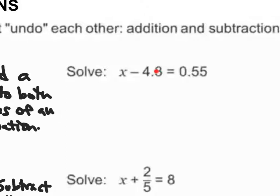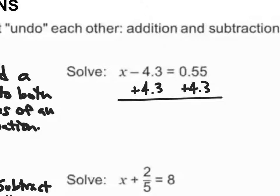Let's solve this equation: x minus 4.3 is equal to 0.55. My goal is to isolate my x value. In order to do that, I have to move this negative 4.3 to the other side. If I'm subtracting 4.3, the opposite would be adding 4.3 to both sides. Negative 4.3 plus 4.3 cancels out, so I have x is equal to 0.55 plus 4.3, which gives me x is equal to 4.85.